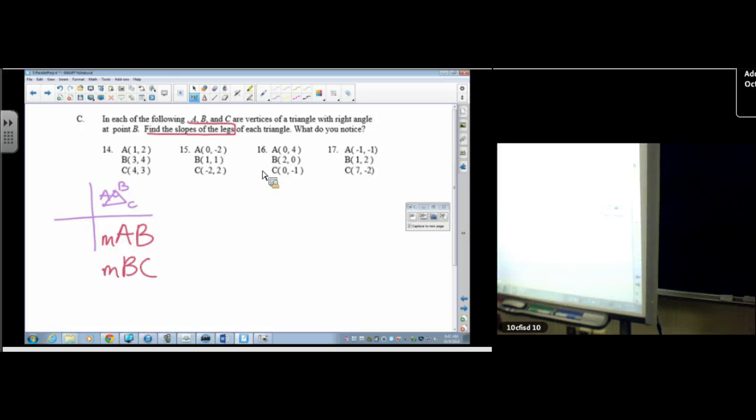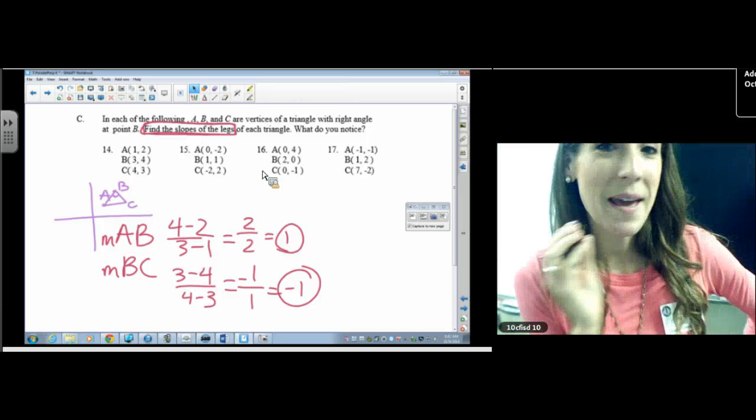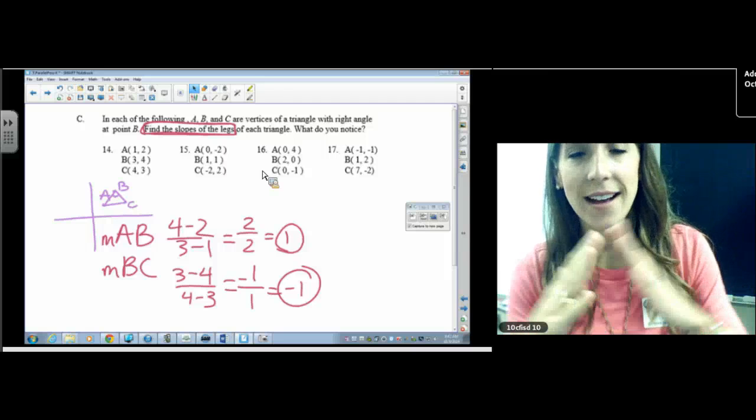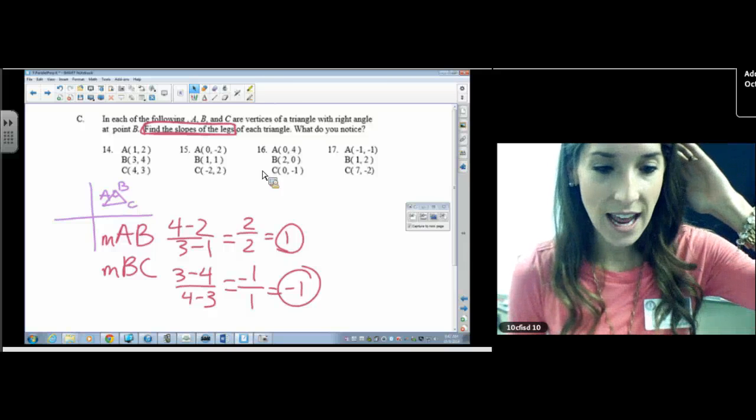So we're doing what it says. We're finding the slopes of the legs. So the slope of AB, that would be Y minus Y over X minus X. And the slope of BC, that would be Y minus Y over X minus X. So that would be 2 over 2, and this one would be negative 1 over 1. And so that's what that one was asking you to do. It didn't make a whole lot of sense. But it has to do with the fact that B is a right angle and that those two sides are perpendicular. And that is actually today's lesson.